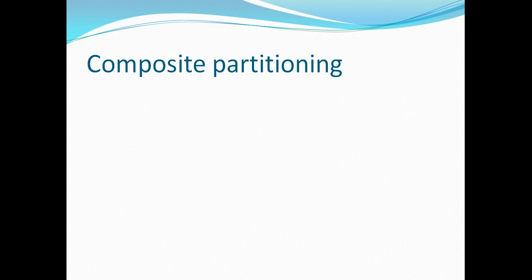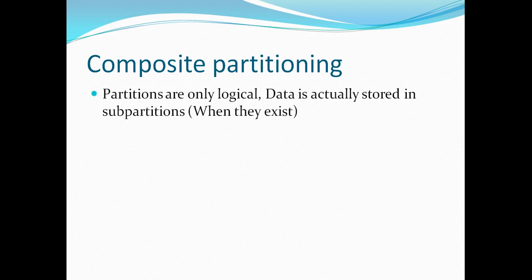A quick recap: composite partitioning means mixing and matching the existing three partitioning strategies to achieve better results for very large objects. Partitions are only a logical concept — the data is actually stored in sub-partitions when sub-partitions exist. We saw how range partitioning for 2015, 2016, and 2017 was combined with list sub-partitioning, and the data was stored in segments corresponding to those sub-partitions.